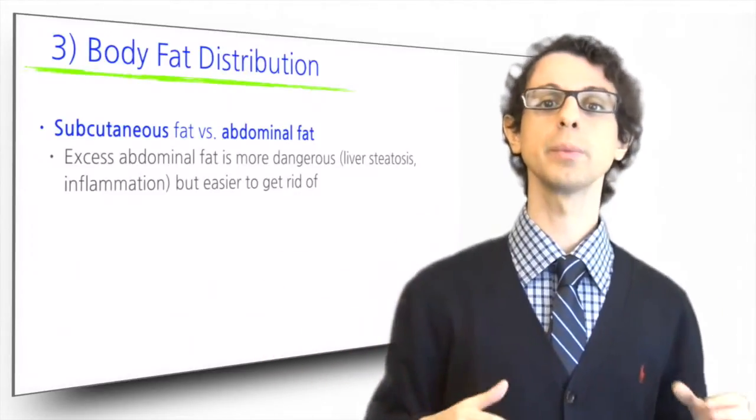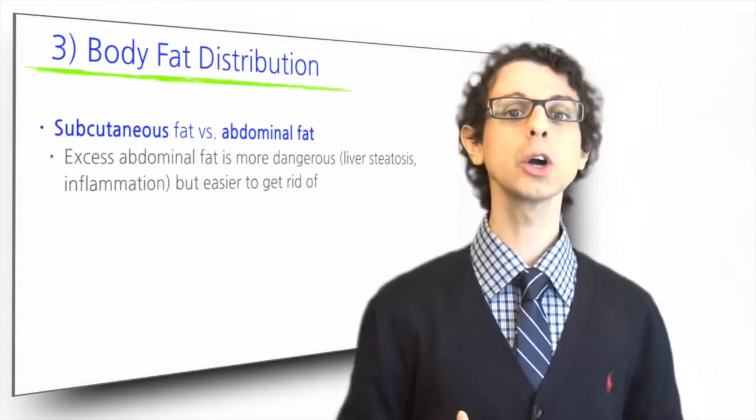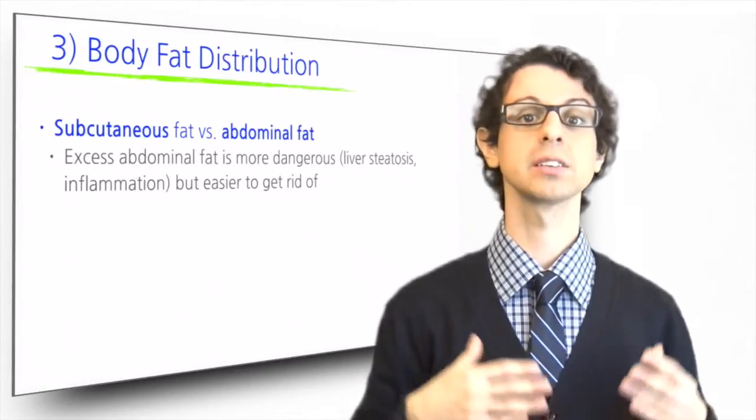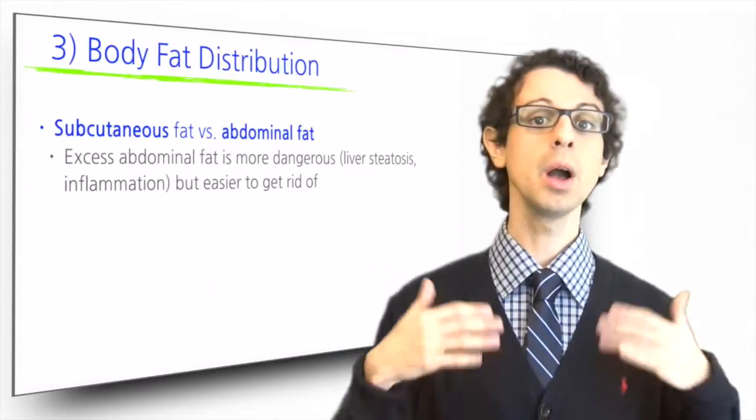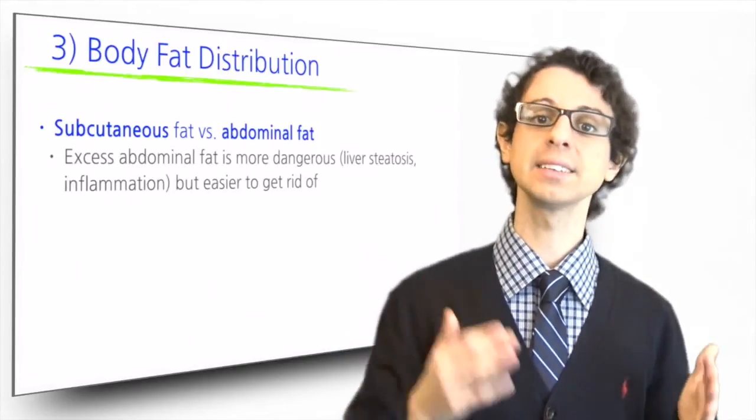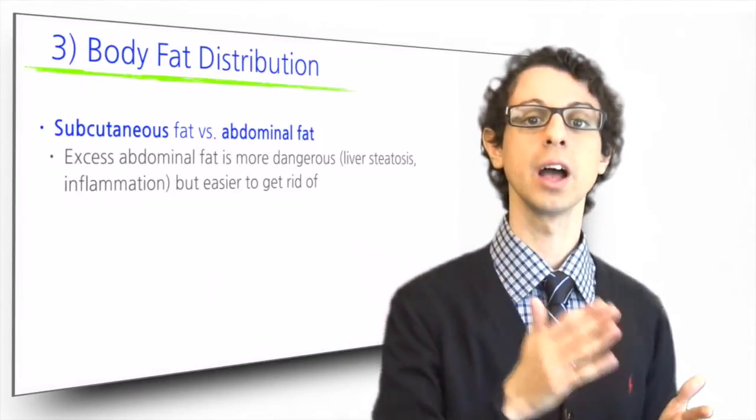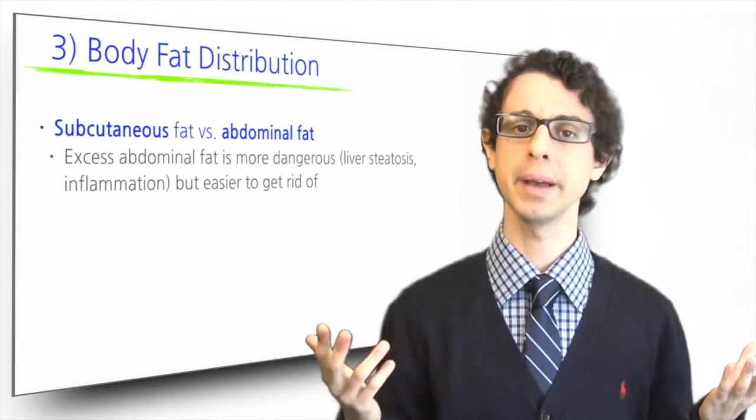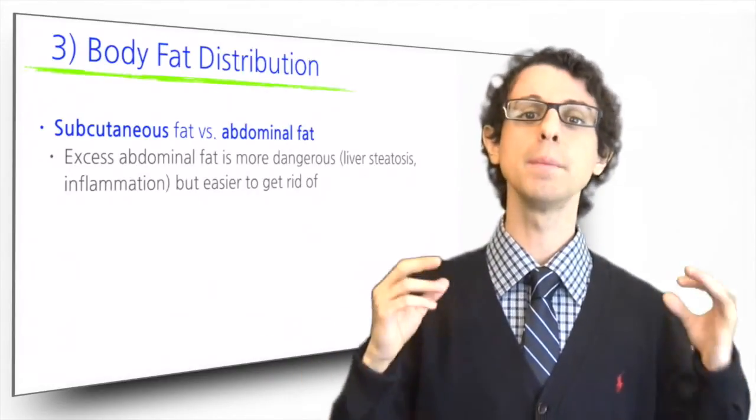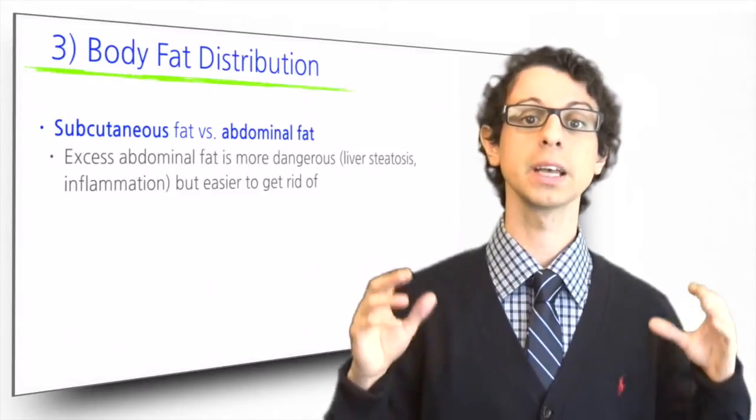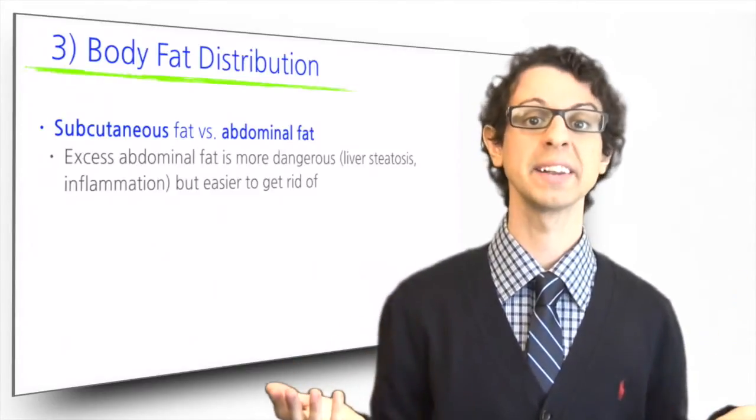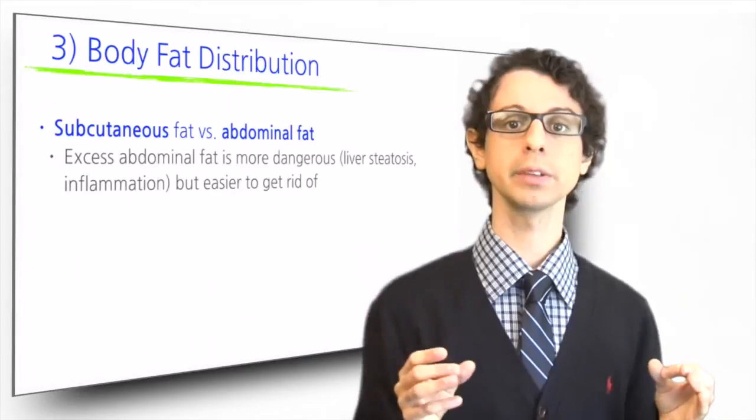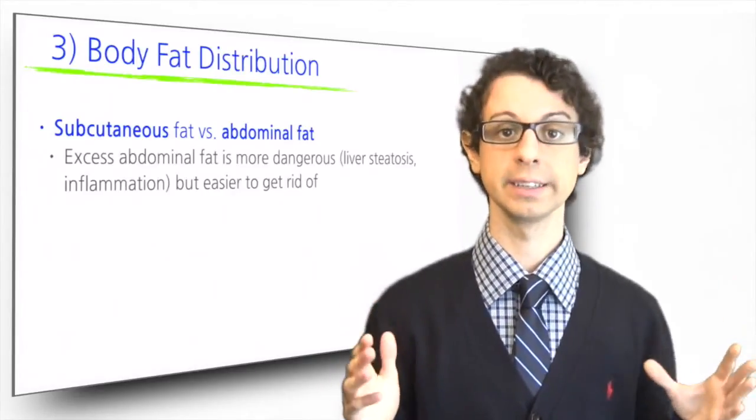First, fat release from abdominal stores does not go into general circulation as fat normally does, for example when we absorb it from food, and instead goes directly to the liver through the portal vein. The liver is not really prepared to handle this fat and mostly deposits it, causing hepatic steatosis or fatty liver, disrupting lipoprotein metabolism and causing insulin resistance.